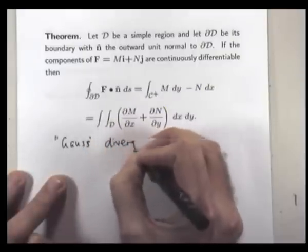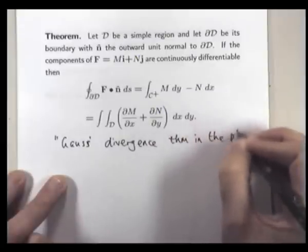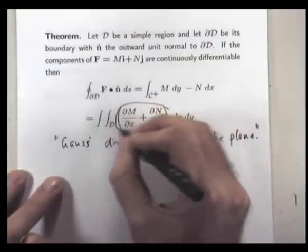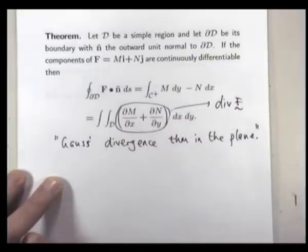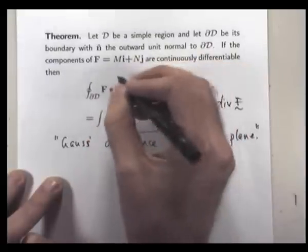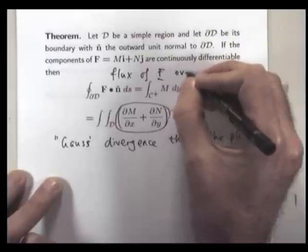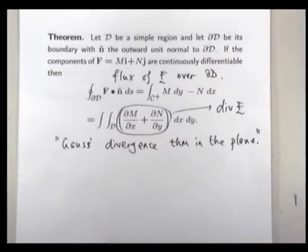So, also known as Gauss's divergence theorem in the plane. So, this is just the divergence of F. And up here, this is the flux of F over the closed curve, which is the boundary of D.